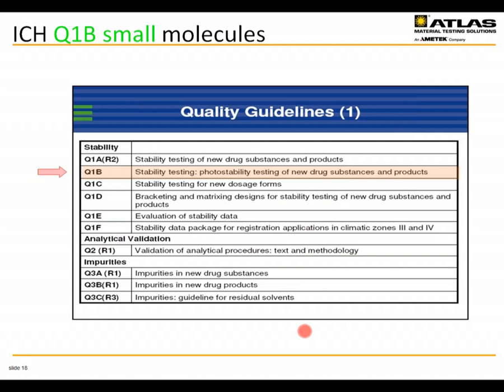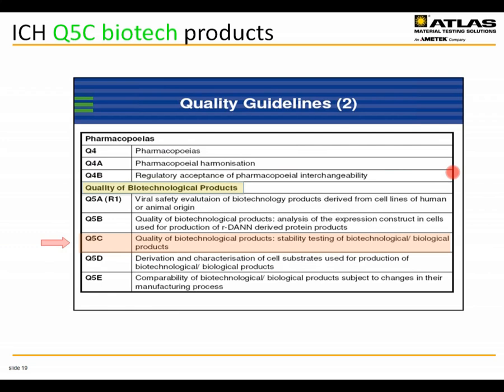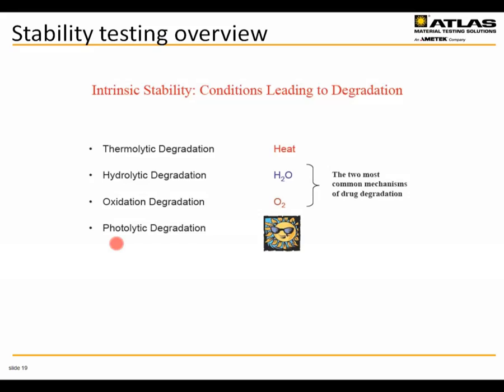There are two guidelines of interest. When dealing with small, traditional pharmaceutical molecules — typical drugs — the photostability testing requirements are governed by ICH Q1B, stability testing and photostability testing of new drug substances and products. When we move to the world of biotechnology products such as proteins, peptides, and monoclonal antibodies, those are governed by ICH Q5C, which governs the stability testing of biotechnological or biological products. This presentation will focus primarily on Q1B and touch briefly on Q5C differences at the end.